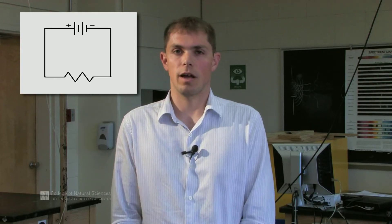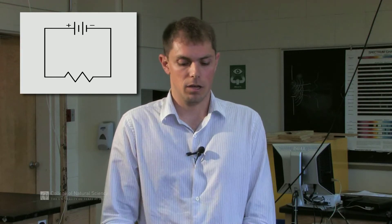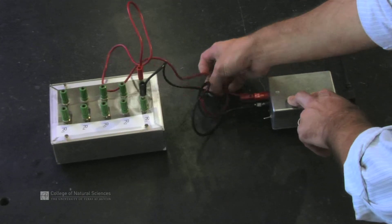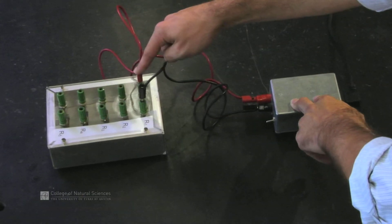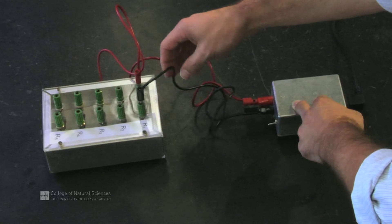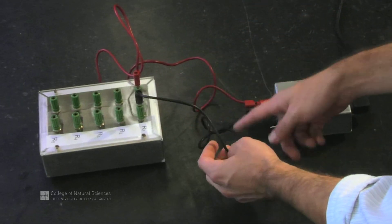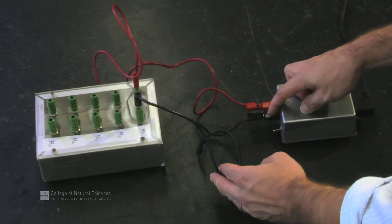Go back to our circuit diagram and we'll just do a quick check. Power supply is connected to a wire. The wire is connected to the resistor. That resistor is connected to a second wire. And that wire is connected back to the power supply.